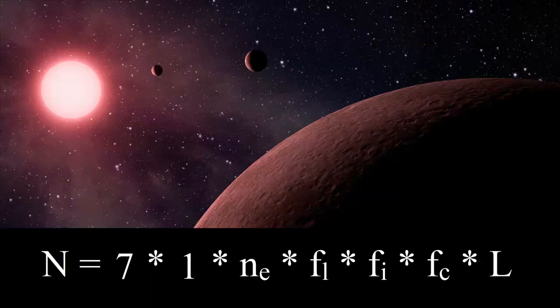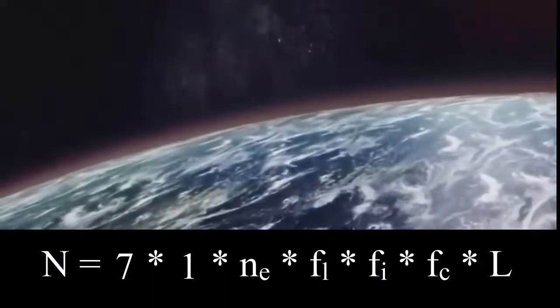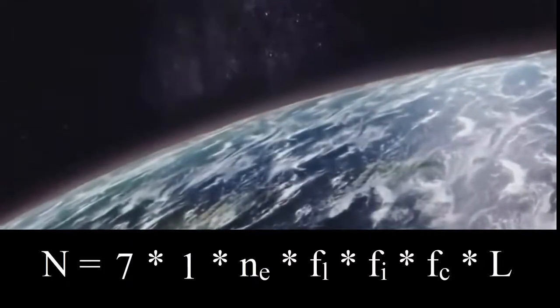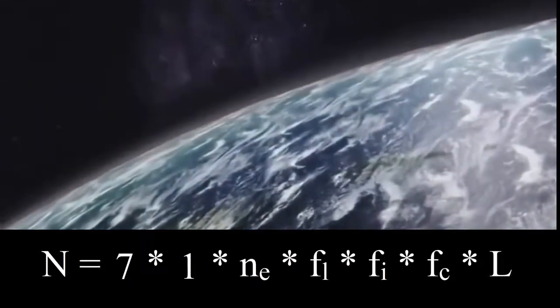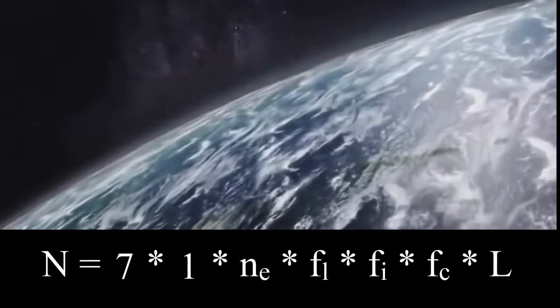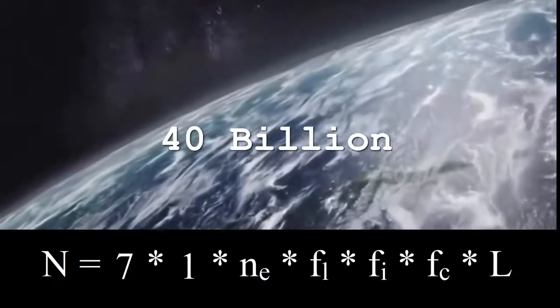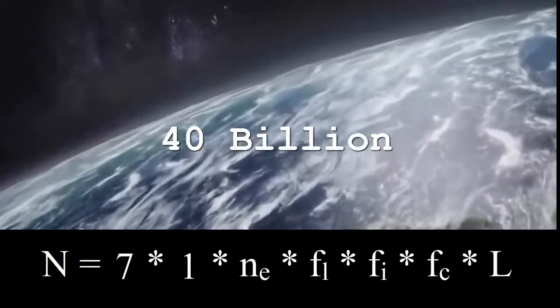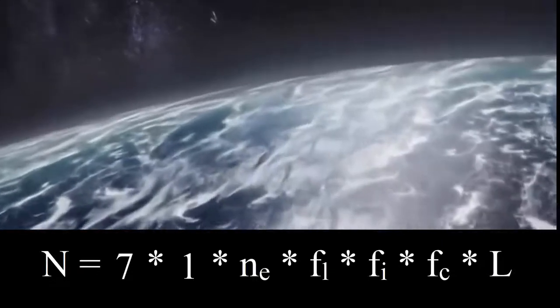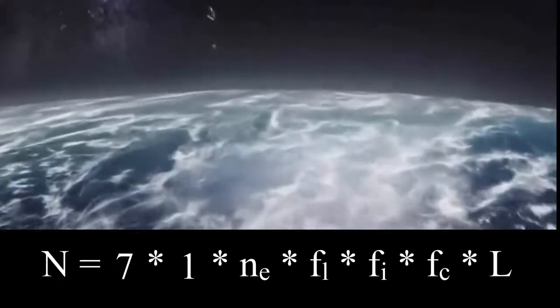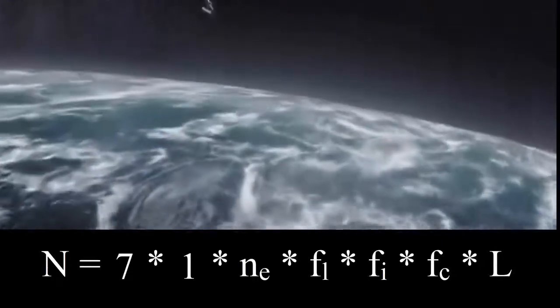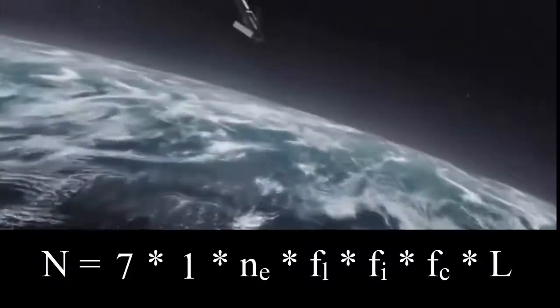The next number we need to plug in is NE, the average number of habitable planets per star. On November 4, 2013, astronomers reported that based on Kepler's space mission data, there could be as many as 40 billion Earth-sized planets orbiting in the habitable zones of sun-like stars within the Milky Way galaxy. So now we need to see how many stars are in our galaxy, so we know what percentage of stars have Earth-like planets in the Milky Way.